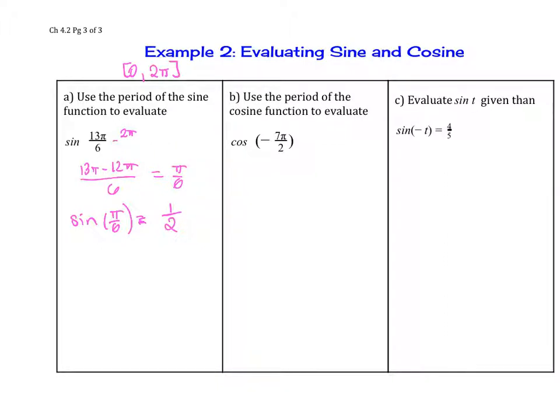Use the period of cosine to evaluate cosine of -7π/2. We want to find a coterminal angle between 0 and 2π. Starting with -7π/2, adding 2π gives -7π + 4π over 2, which is not enough. Adding 4π instead: -7π + 8π over 2 equals positive π/2. Cosine of π/2 is at the top, where x is 0 and y is 1, so cosine of π/2 is 0.